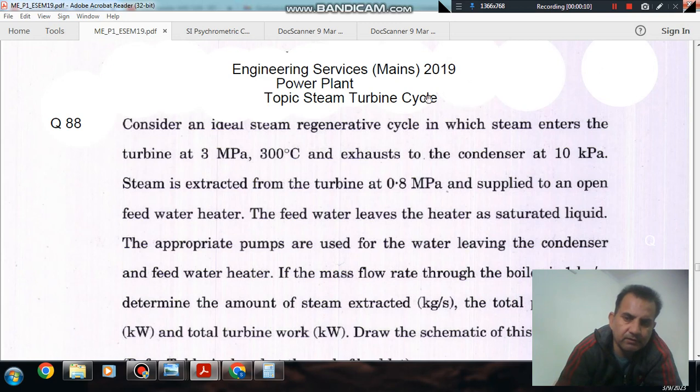From the GATE Mains 2019, consider an ideal steam regenerative cycle in which steam enters the turbine at 3 MPa, 900°C and exhausts to the condenser at 10 kPa. The steam is extracted from the turbine at 0.8 MPa and supplied to an open feedwater heater.